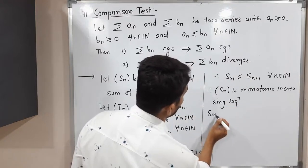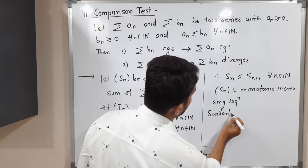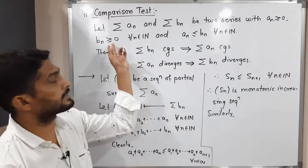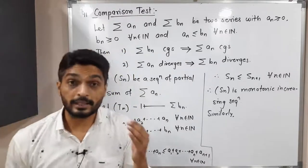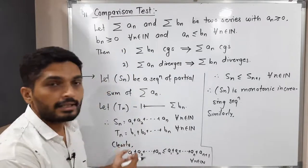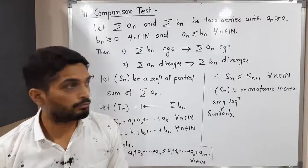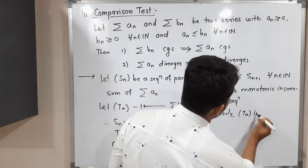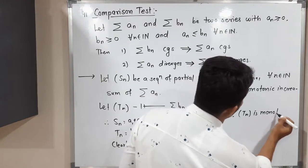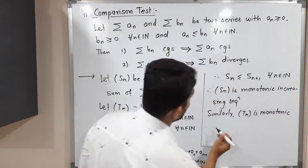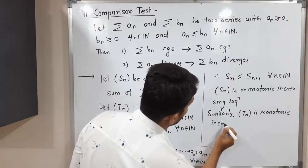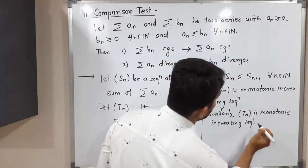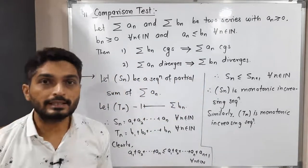Similarly, for the sequence Tₙ, since bₙ ≥ 0 for all n, the same argument applies. Therefore Tₙ is also a monotonic increasing sequence.